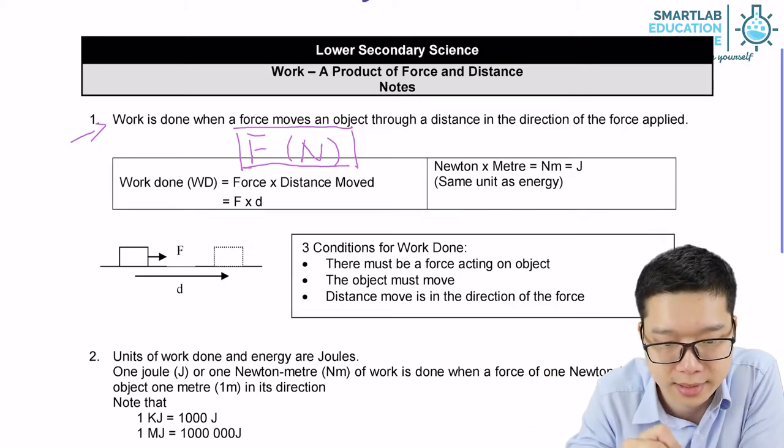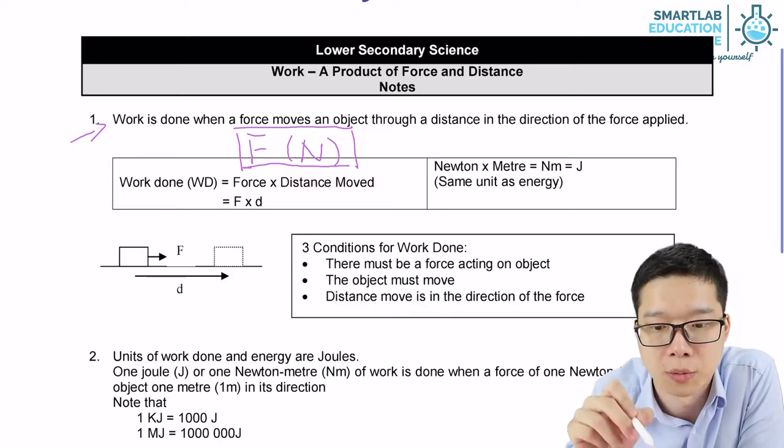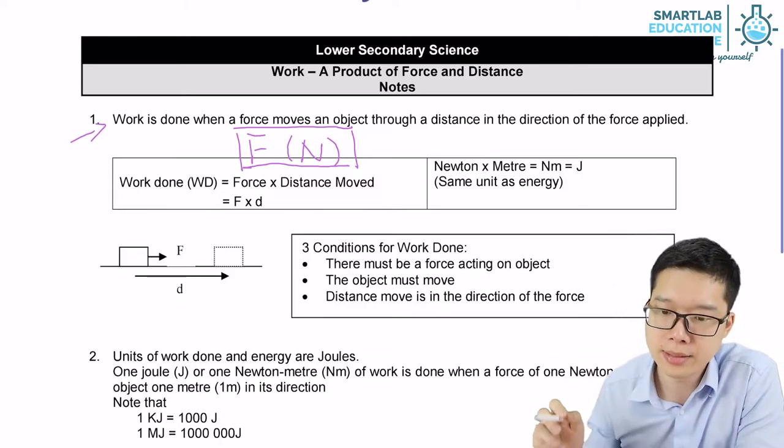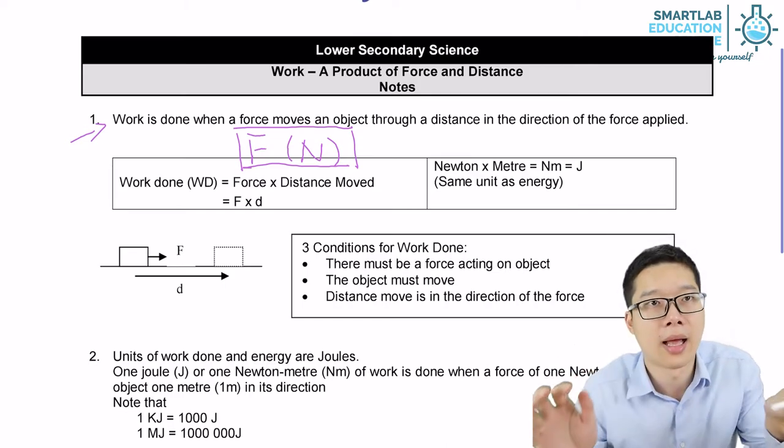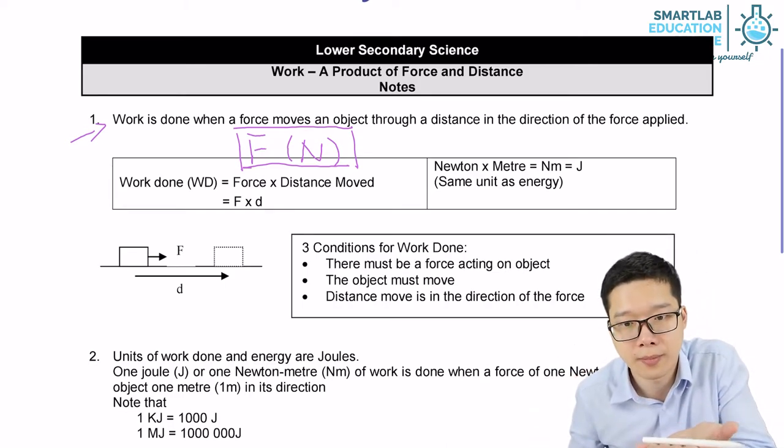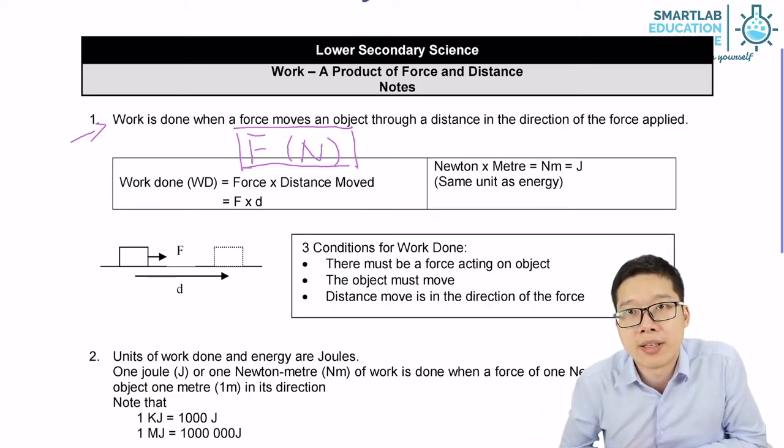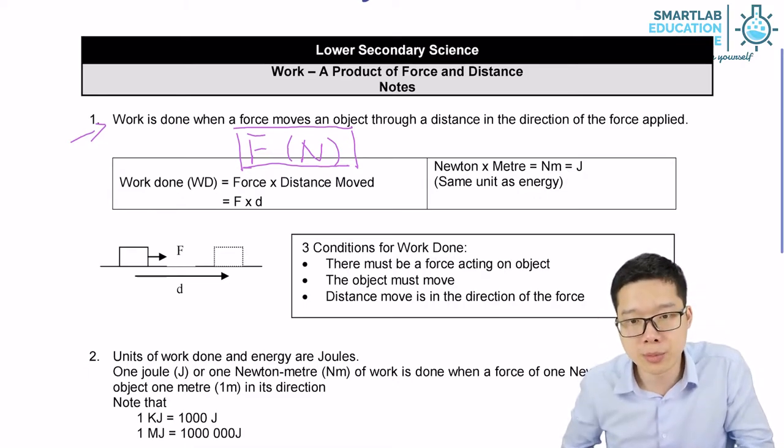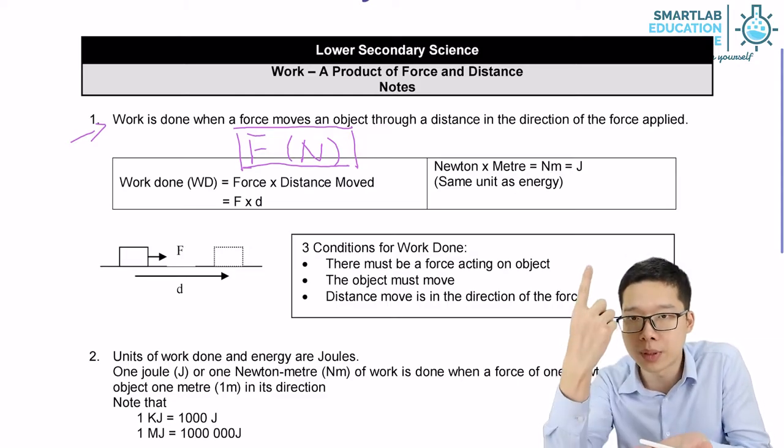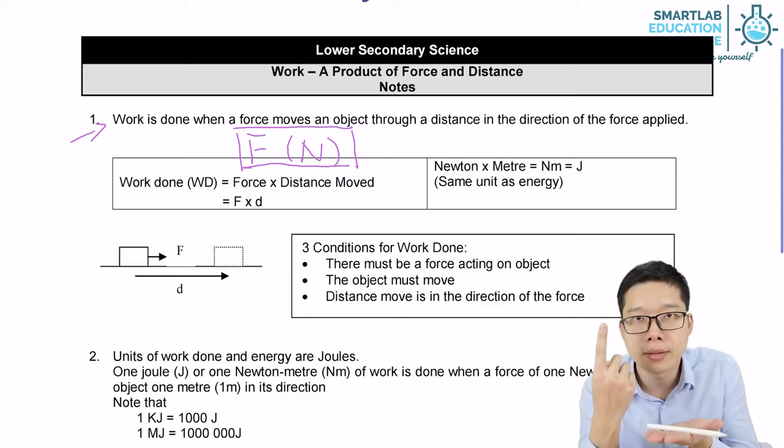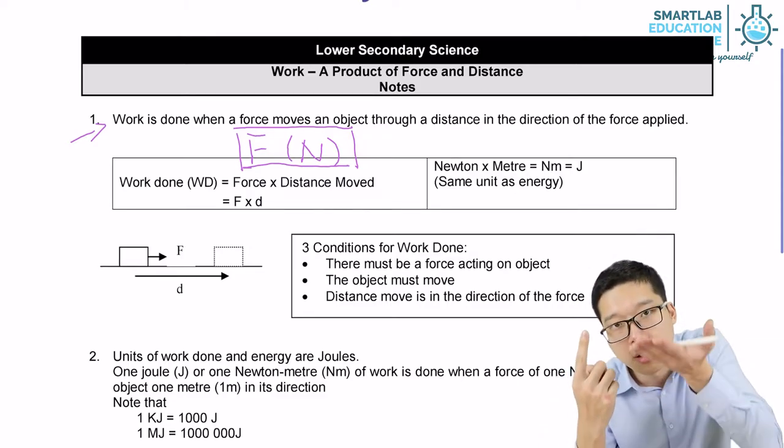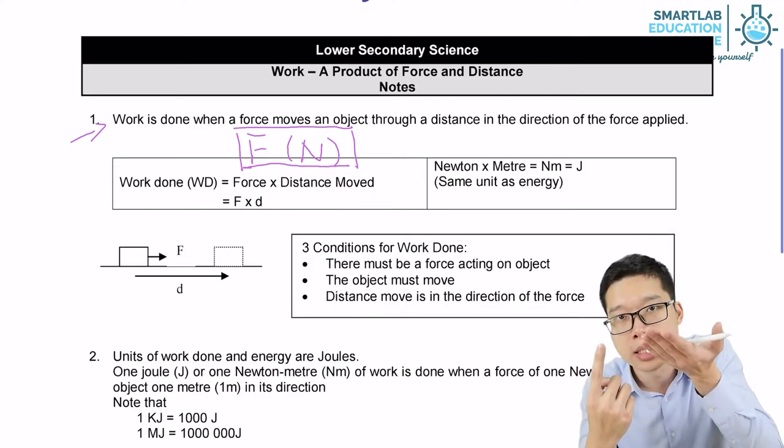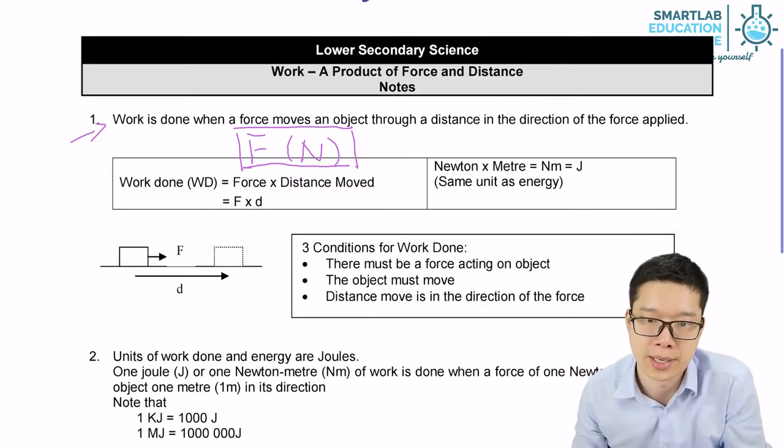Work is done when a force moves an object through a distance. Say if I'm holding the pen, keep giving it forces, lifting it up. I use my force. My force is going up. And the pen, it goes up in a certain direction, a certain distance. I'm doing work on the pen.